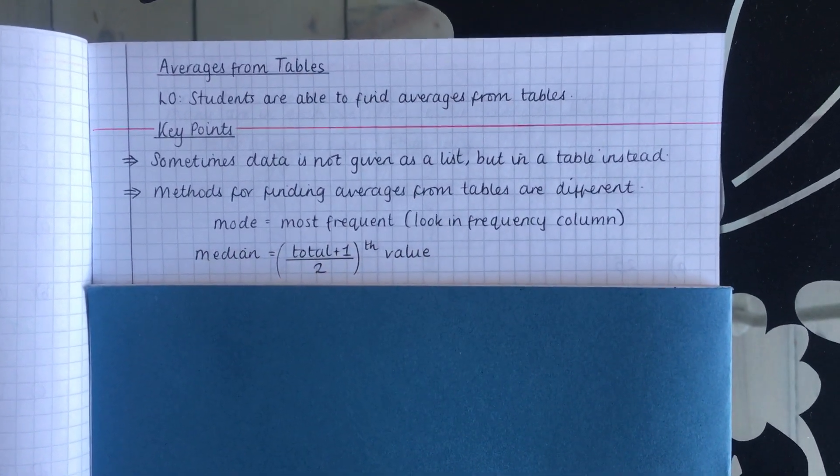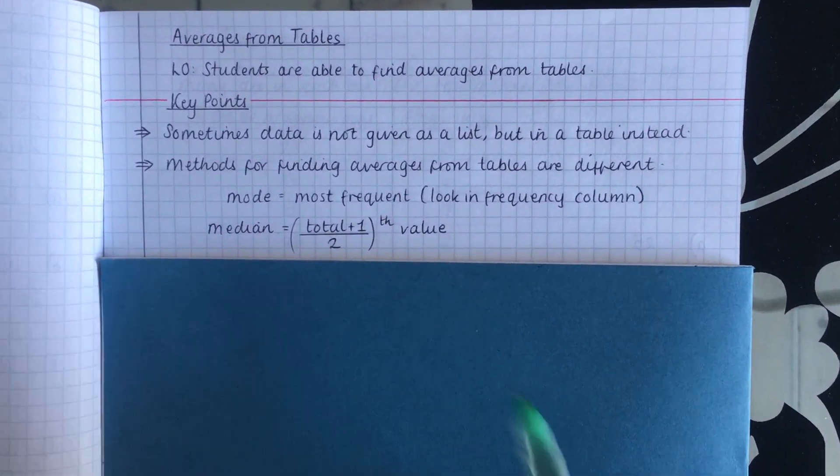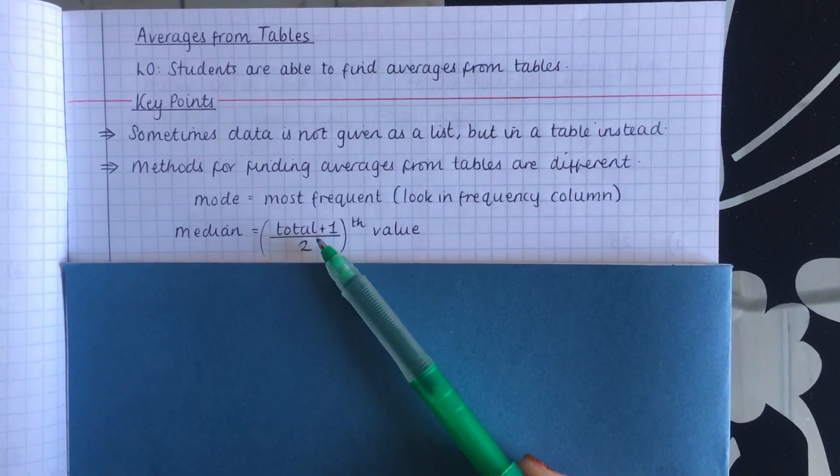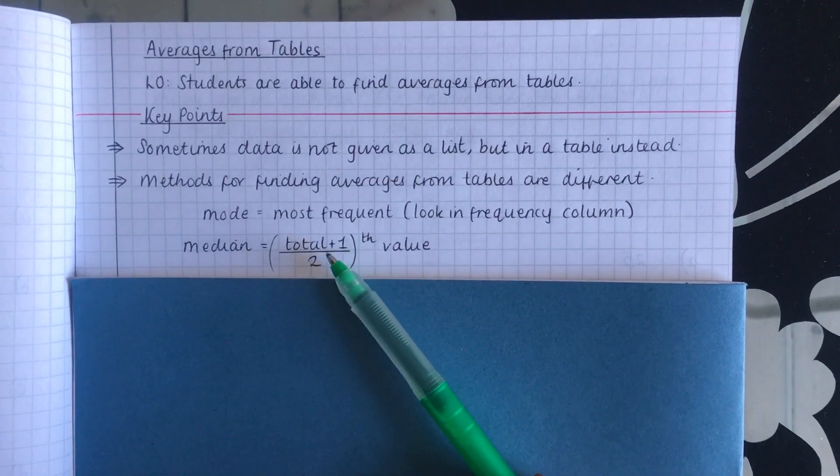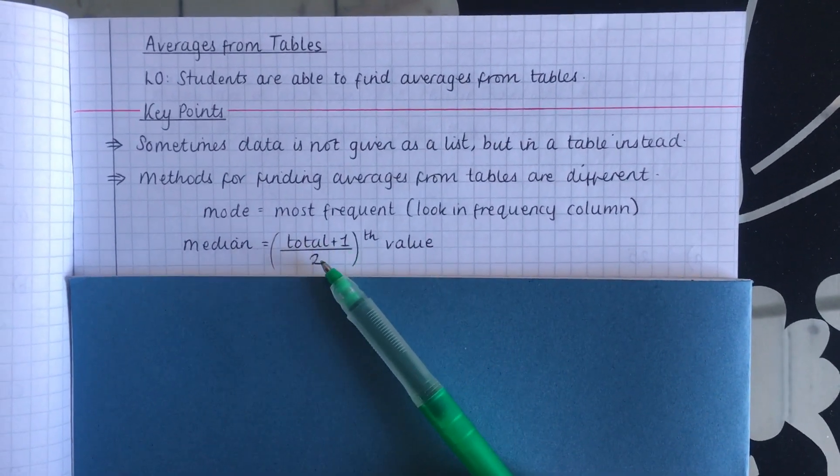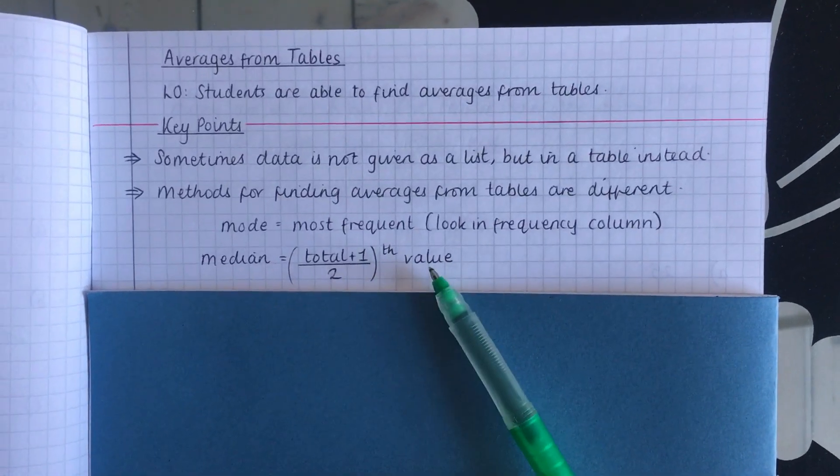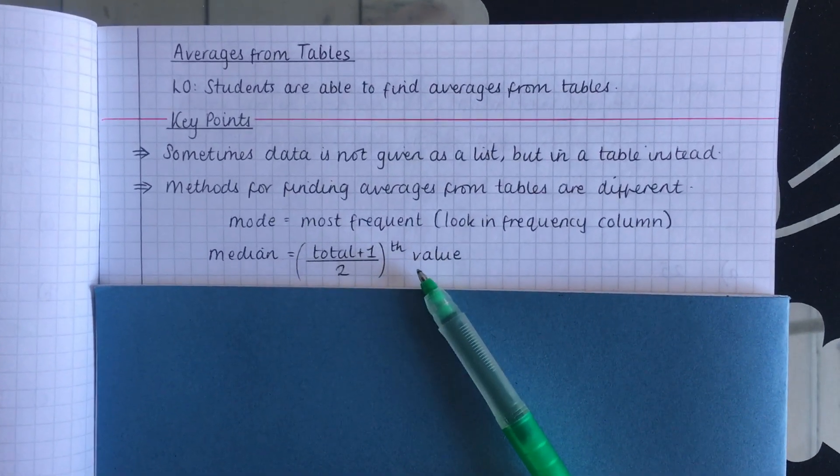The median - this is an important new method. It's different to crossing off on both sides. Now what you have to do is the number of numbers, so not the total when you add them together, but the number of numbers. Add 1 divided by 2 and we're looking for that value. Again, this will become more clear when we do an example, but for now just write that method down.